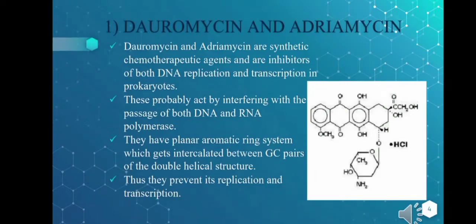The first inhibitor of DNA replication is daunomycin and adriamycin. These are synthetic chemotherapeutic agents and are inhibitors of both DNA replication and transcription in prokaryotes. They probably act by interfering with the passage of both DNA and RNA polymerases. As you can see in the picture, these have a planar aromatic ring system.